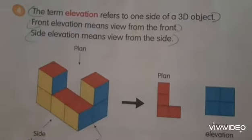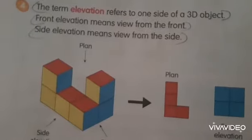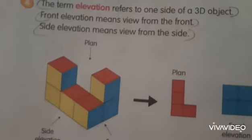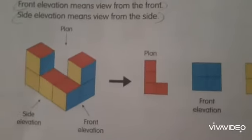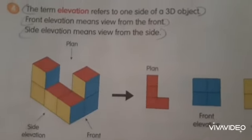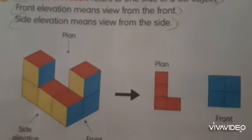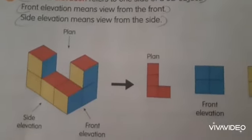Now, what do we understand by elevation? The term elevation means one side of a 3D object. We know that the top view is called the plan, so we are left with the front and side view. The front elevation means view from the front, and the side elevation means view from the side. The view from the top is called plan or top view, and elevation refers to one side of a 3D figure.